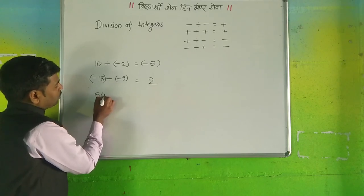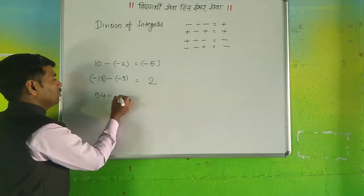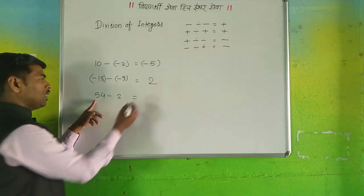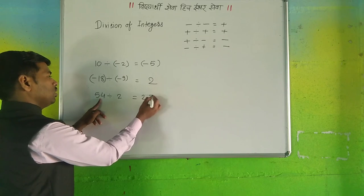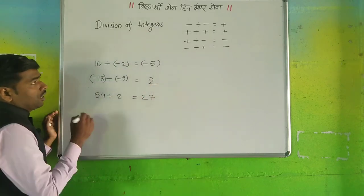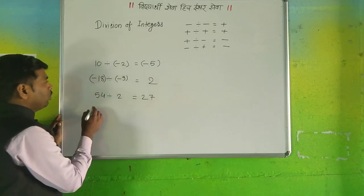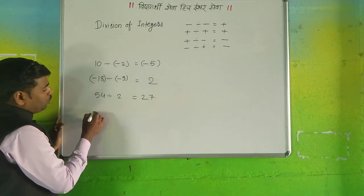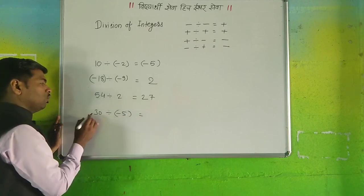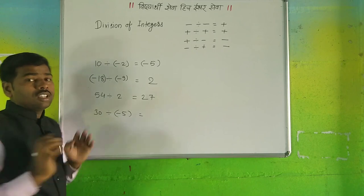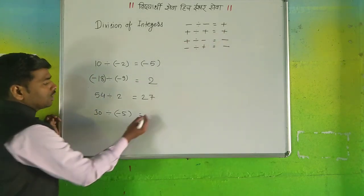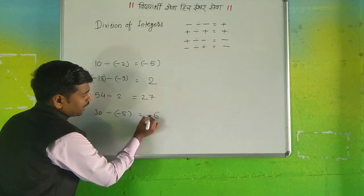Next example: 54 divided by 2. 2 times 27 is 54 — both are positive, so positive divided by positive is positive, giving us 27. Now example: 30 divided by minus 5. One positive number divided by one negative number — the rule says positive divided by negative is negative. 5 times 6 is 30, so the answer is minus 6.